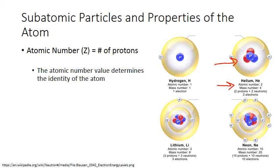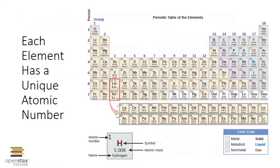We can keep adding more protons and changing the identity of the atom to different elements. Increase the number of protons to three — atomic number three — and we have an atom of lithium. Increase it to ten, and we have an atom of neon. Each element on the periodic table has a unique atomic number indicating the number of protons found in every atom of that element. If you change the number of protons, you change the identity of the element.